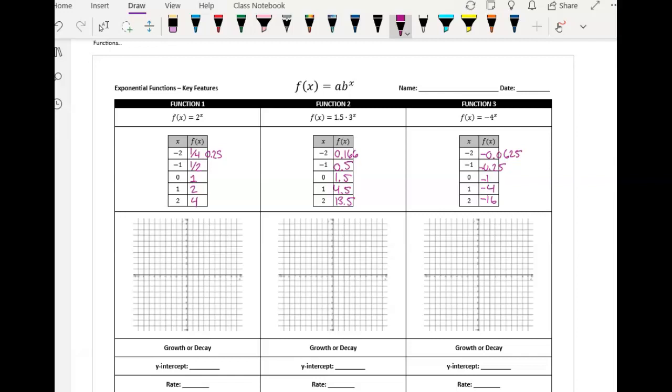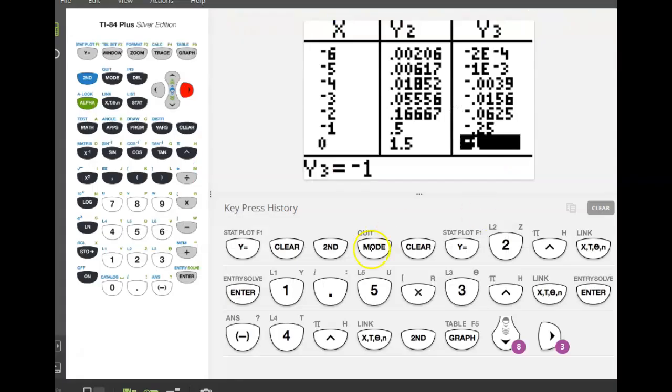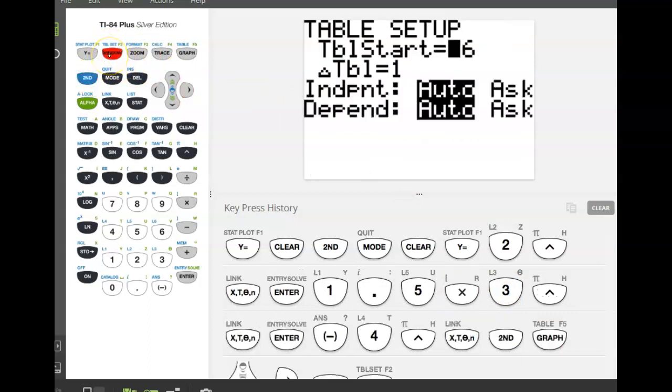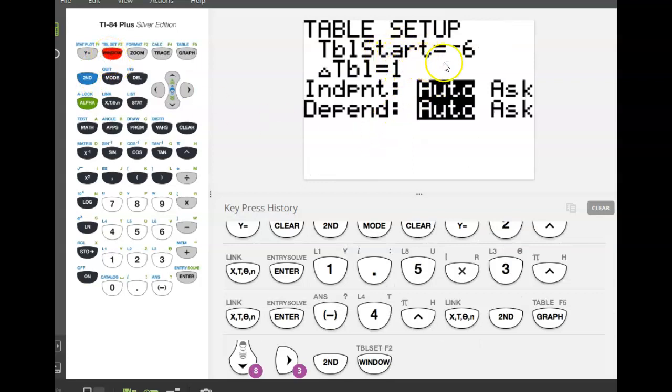Now, if yours doesn't set up like this, you might need to go to where it says table set right above that window button. Originally when I did this, my table starting value was at 0. And I want to see what my function looks like with some negatives involved. So you can change this to be anything you want. And also the change in the table means how do you want your x values to count by? So I wanted to go by whole numbers.